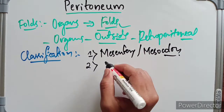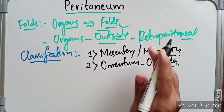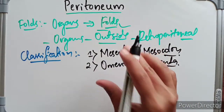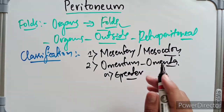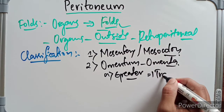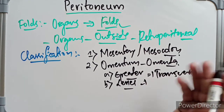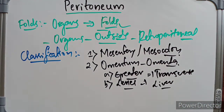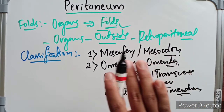The second classification is the omentum — singular omentum, plural omenta. These are peritoneal folds that connect the stomach with other viscera. The greater omentum connects the stomach with the transverse colon along the greater curvature of the stomach. The lesser omentum connects the stomach with the liver along the lesser curvature of the stomach. We also have the gastrosplenic omentum, which connects the fundic region of the stomach to the spleen.